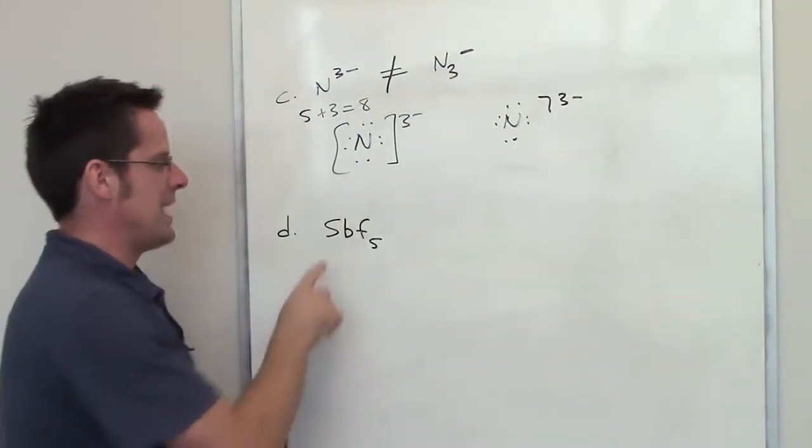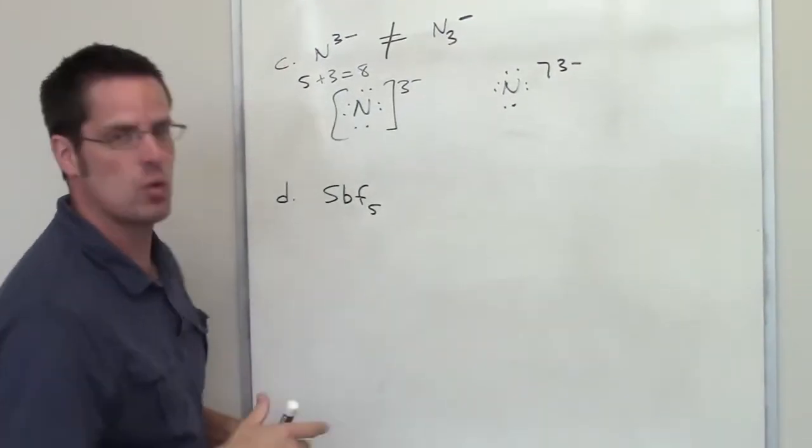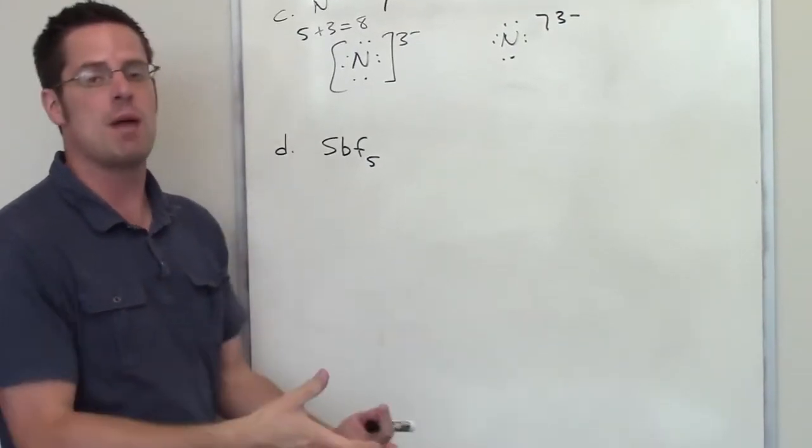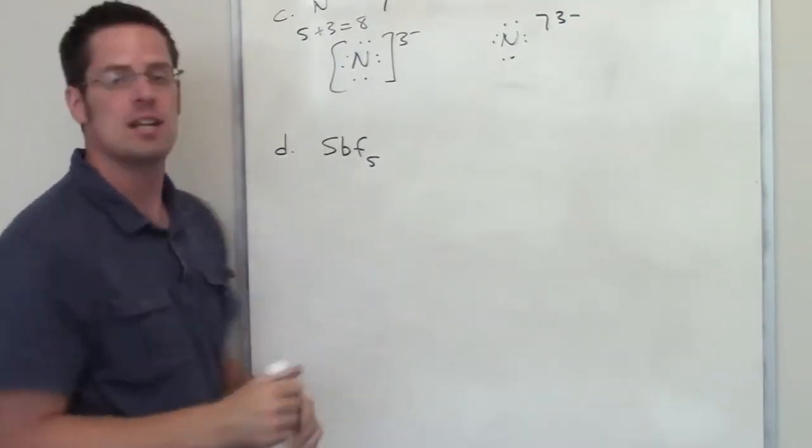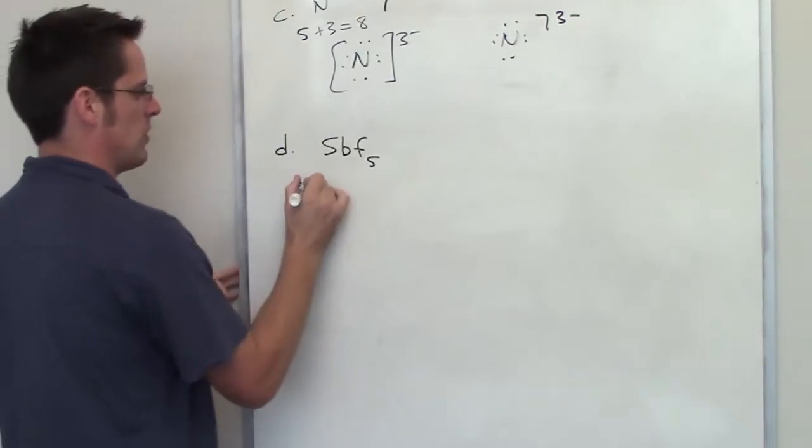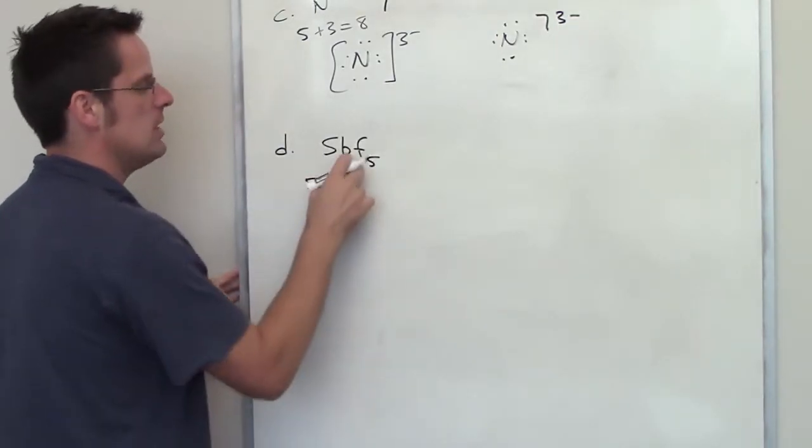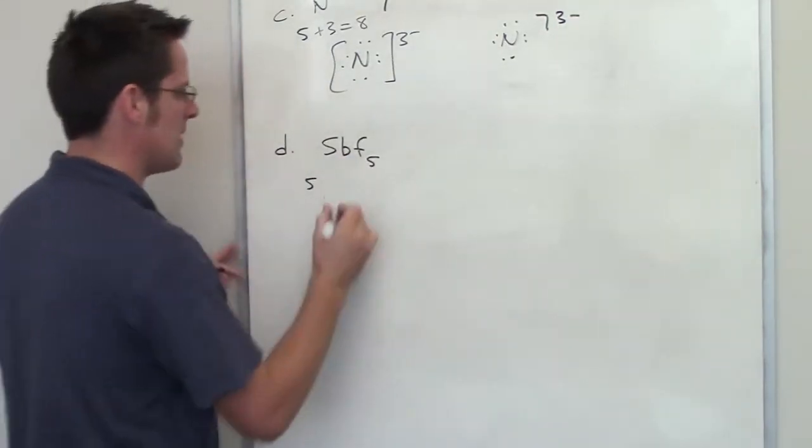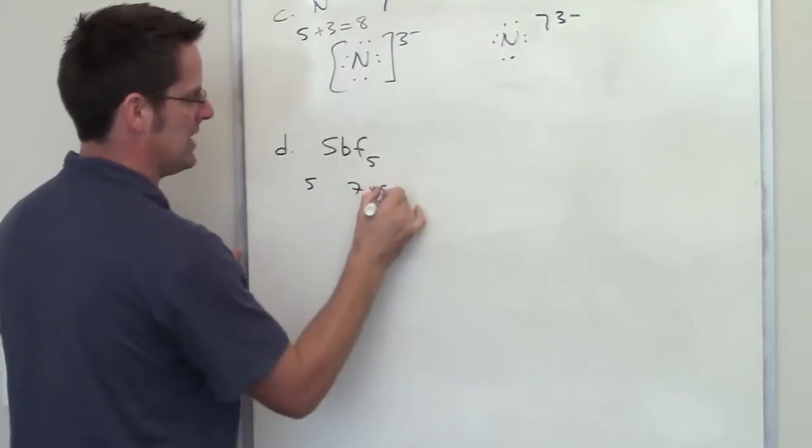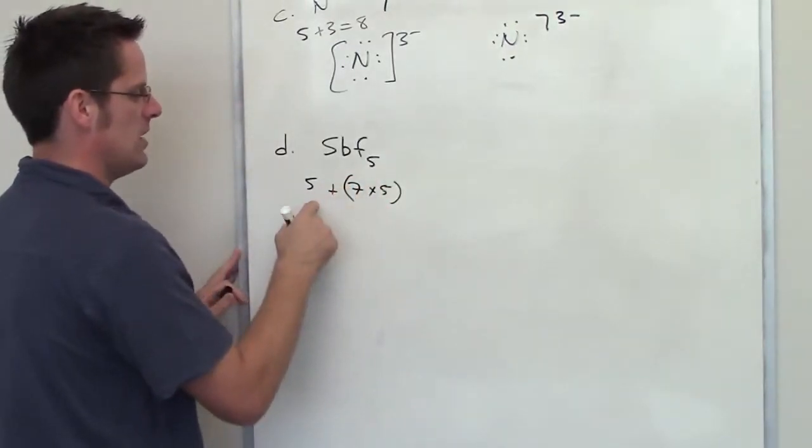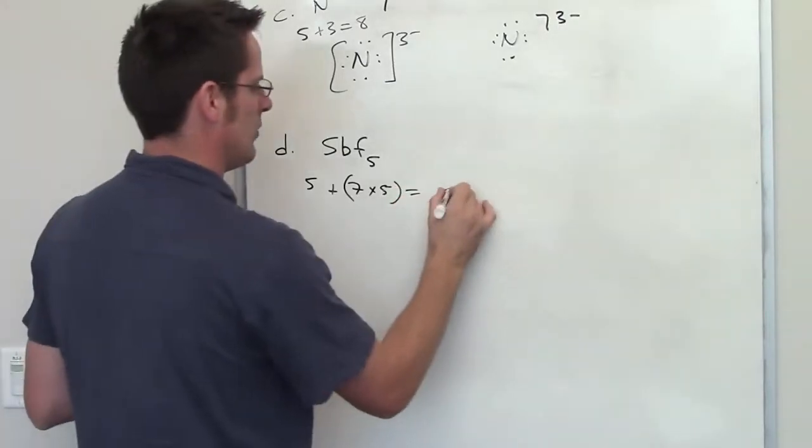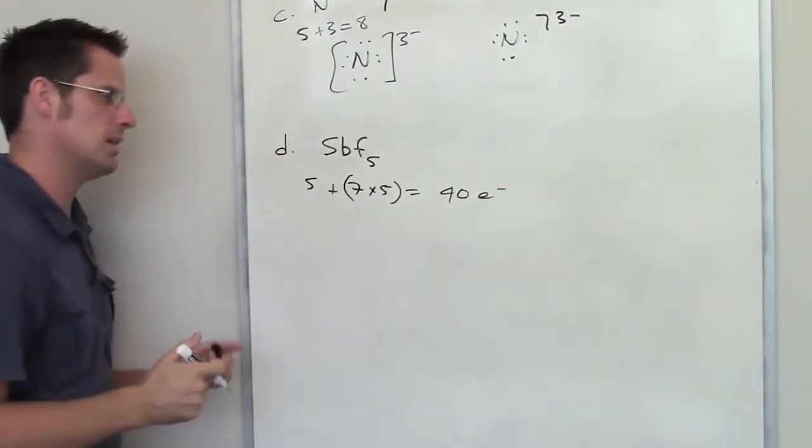In the second problem, I've got antimony pentafluoride. So the first step, once again, is I need to count how many valence electrons I have. Antimony is in column 5 of the periodic table, so there are five valence electrons in antimony. Fluorine's in column 7A, so there are seven valence electrons there, and there are five individual fluorines. So I'm going to add them all together. That ends up giving me 40 total valence electrons to play with in this molecule.